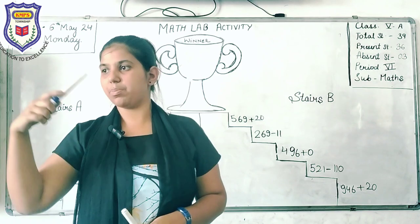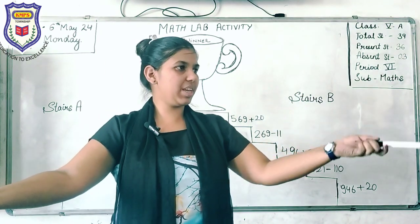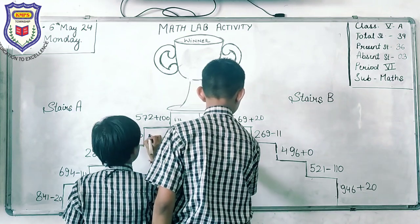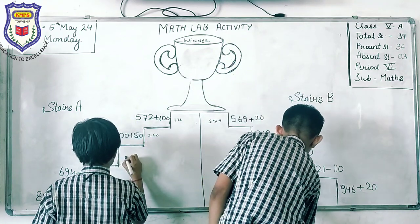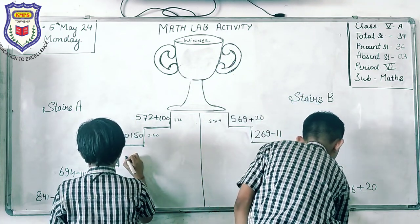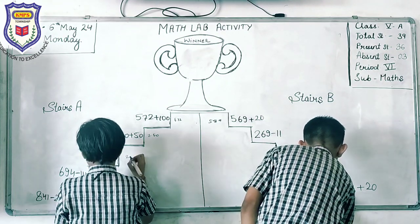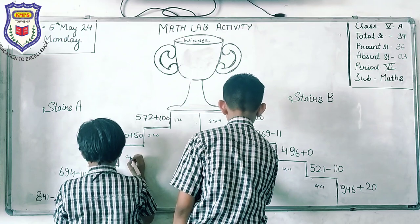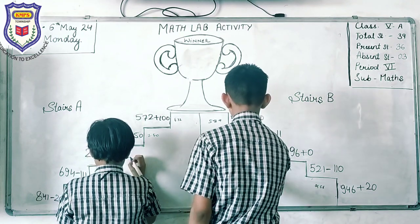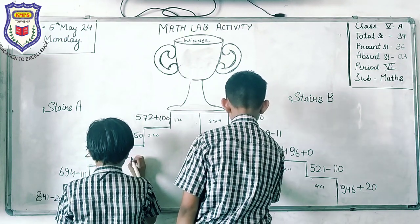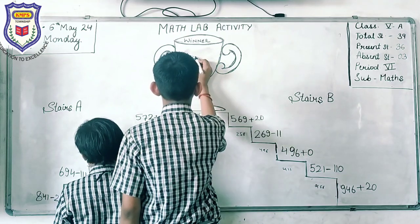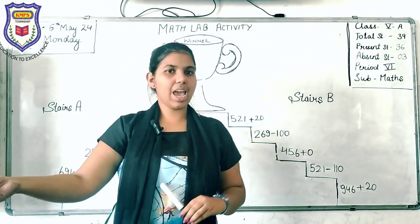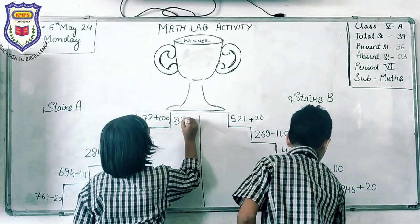Student A is Parmita and student B is Disar. Now another student is Aasta and Prasant.